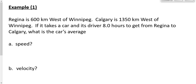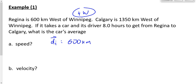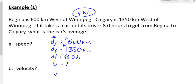Let's look at example number one. Regina is 600 kilometers west of Winnipeg — that's the position of Regina, our initial position DI. I'm going to define west as positive. DI is 600 kilometers west of Winnipeg. Calgary, which is DF, is 1,350 kilometers west of Winnipeg — positive as well since west is positive. It takes eight hours to go from Regina to Calgary. We want to find the average speed and average velocity.